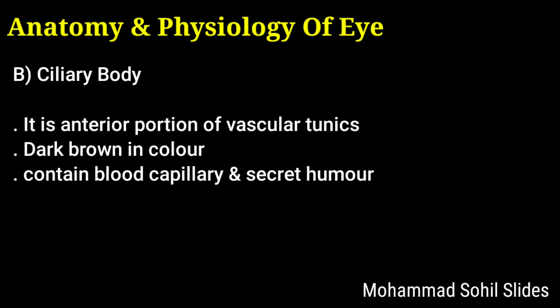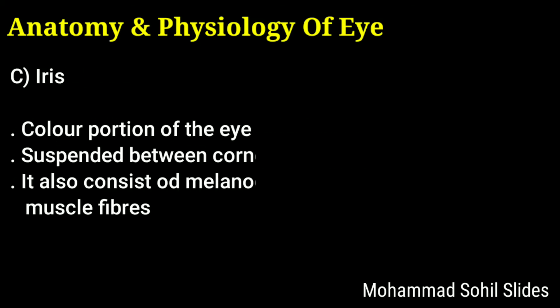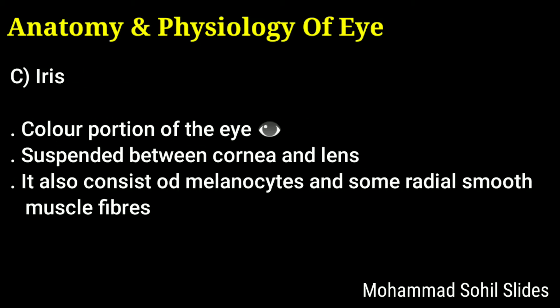The third part is the iris. The iris is the colored portion of the eye and eyeball. It is suspended between the cornea and the lens. It consists of melanocytes and some radial smooth muscle fibers. Its principal function is to regulate the amount of light entering the eyeball through the pupil.